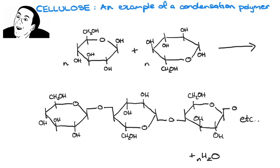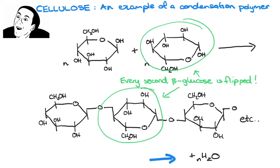Cellulose is an example of a naturally occurring condensation polymer. Within cellulose, beta-glucose monomers join together in an alternating or flipped fashion. As a result, a water molecule is always going to be released when two of these beta-glucose monomers join together.